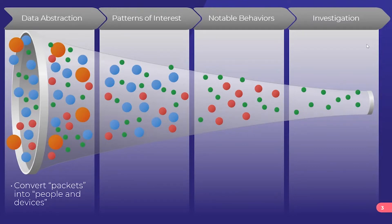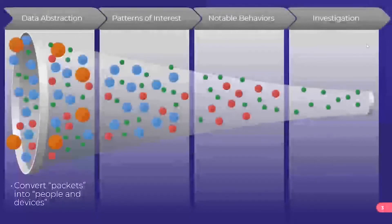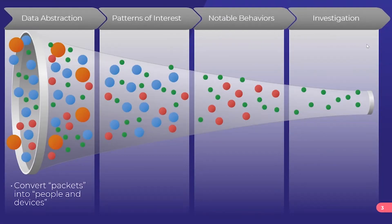We don't have the same structure to the data we're analyzing on the network as we do on the endpoint. You may notice I don't really talk about AI models doing complete threat detection on the network. We hear that in the industry a lot — 'look at this AI, it detects threats' — and if you see those conversations, that should really throw up some red flags.